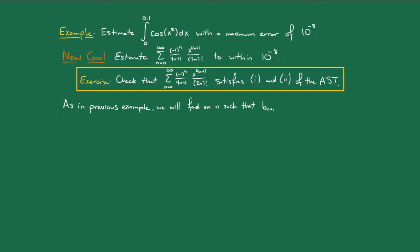We want to find an n such that b_(n+1) is less than or equal to 10⁻⁸. There's no hope of solving this inequality for n algebraically, so let's find an n by testing the first few values. Doing this, we find that the first n that works is n = 3.